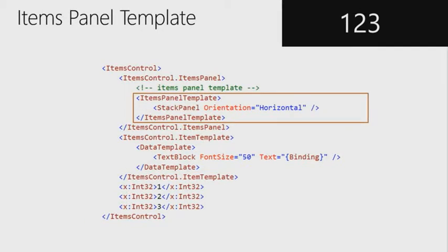Let's add one thing to this items control — the panels template. In the panels template you can see the same controls as before with items one, two, and three, but we've now set the items control dot items panel, which is what the items are rendered inside of. By default it is a vertical stack panel, so we've gone in and changed it to be a horizontal stack panel — that's why it's one, two, three left to right. You can override everything, and you can also put in any of the other panels discussed earlier, such as the wrap panel.